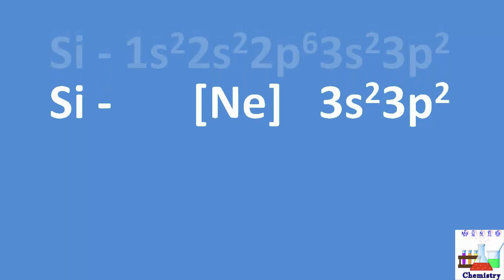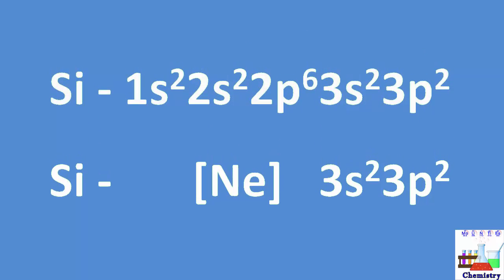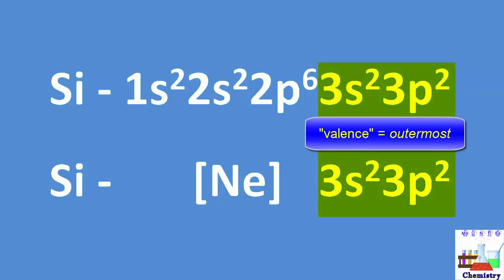Whether the full long-form configuration is used, or the abbreviated noble gas-based configuration is used, both identify the proper distribution of electrons in an atom according to the Aufbau principle, and allow us to determine the valence electrons, those outermost electrons that will be involved with the formation of chemical bonds.